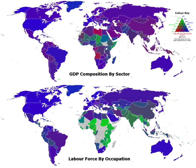Industry is the production of goods or related services within an economy. The major source of revenue of a group or company is the indicator of its relevant industry. When a large group has multiple sources of revenue generation, it is considered to be working in different industries.